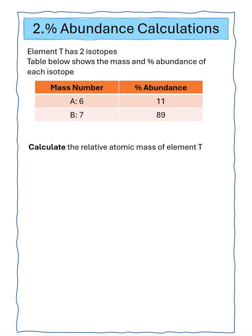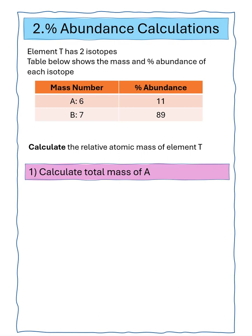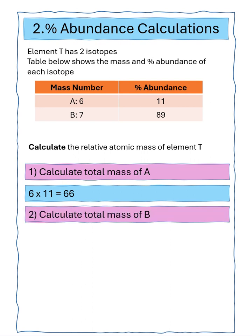Question two says element T has two isotopes. The table below shows the mass and percentage abundance of each isotope — two mass numbers A and B with the percentage abundance of each. We've got to calculate the relative atomic mass of element T. First, we calculate the total mass of A: mass number 6, abundance 11%, giving a total of 66. We then calculate the total mass of B: mass number 7, abundance 89, giving us a total of 623.